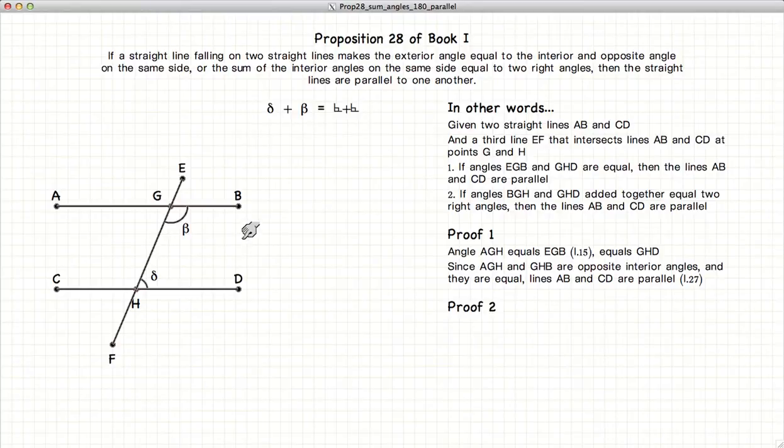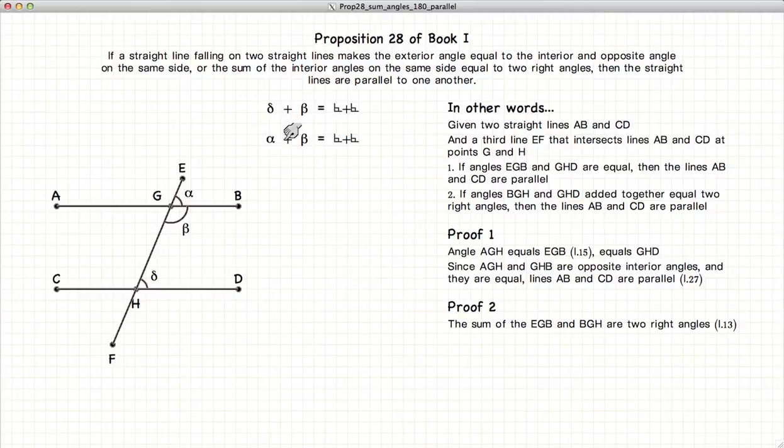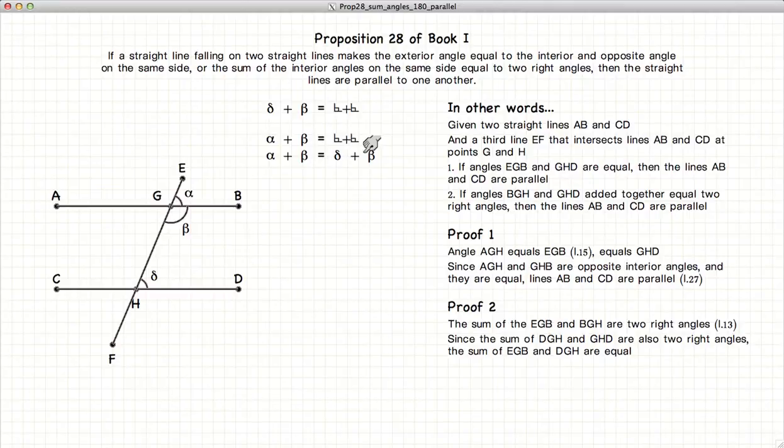Let's go to the second part of the proof now. We have beta plus delta sum up to two right angles. We know from proposition 13 that alpha plus beta is equal to two right angles, since EH is a straight line. And we have delta plus beta is two right angles. Alpha plus beta is two right angles. So that gives us that alpha plus beta is equal to delta plus beta.